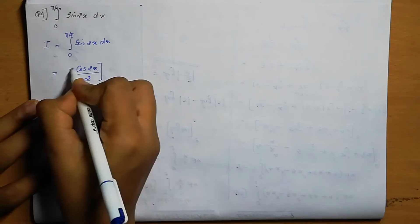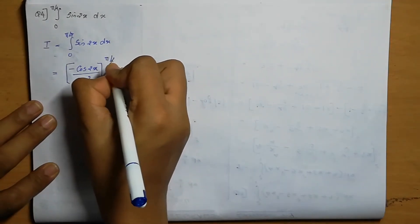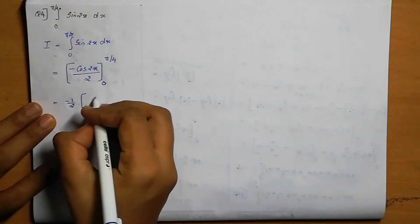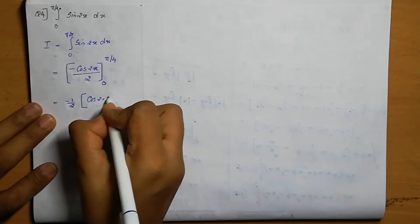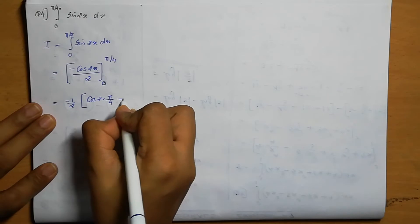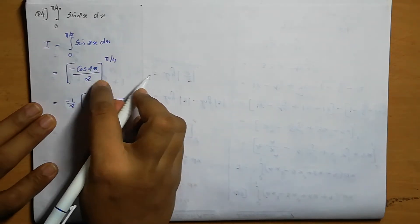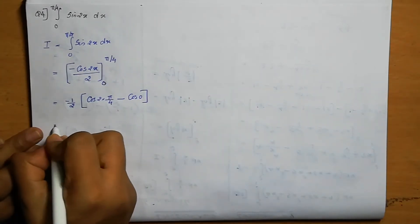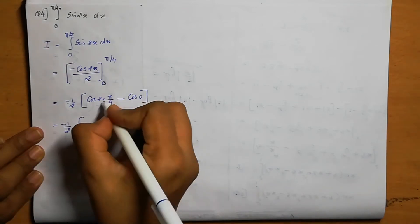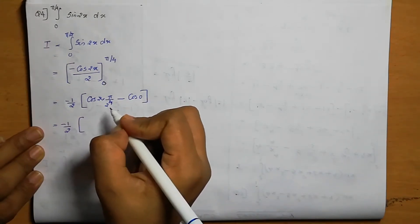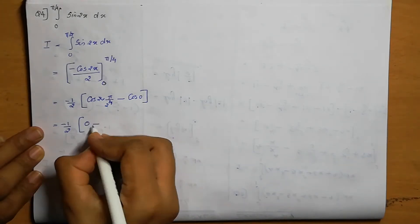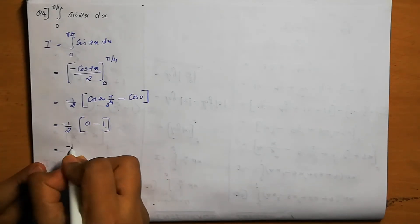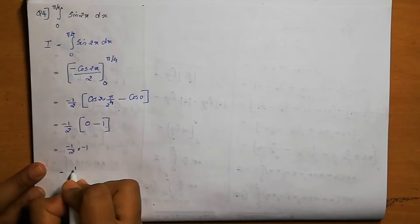Within the limit 0 to pi by 4, this minus 1 by 2 is a constant written outside. Applying the limit: cos 2 times pi by 4 minus lower limit cos of 2 times 0. That means cos pi by 2. Cos pi by 2 is 0. Minus cos 0 is 1. So minus 1 by 2 into (0 minus 1) equals minus 1 by 2 into minus 1, which equals 1 by 2. The answer is 1 by 2.